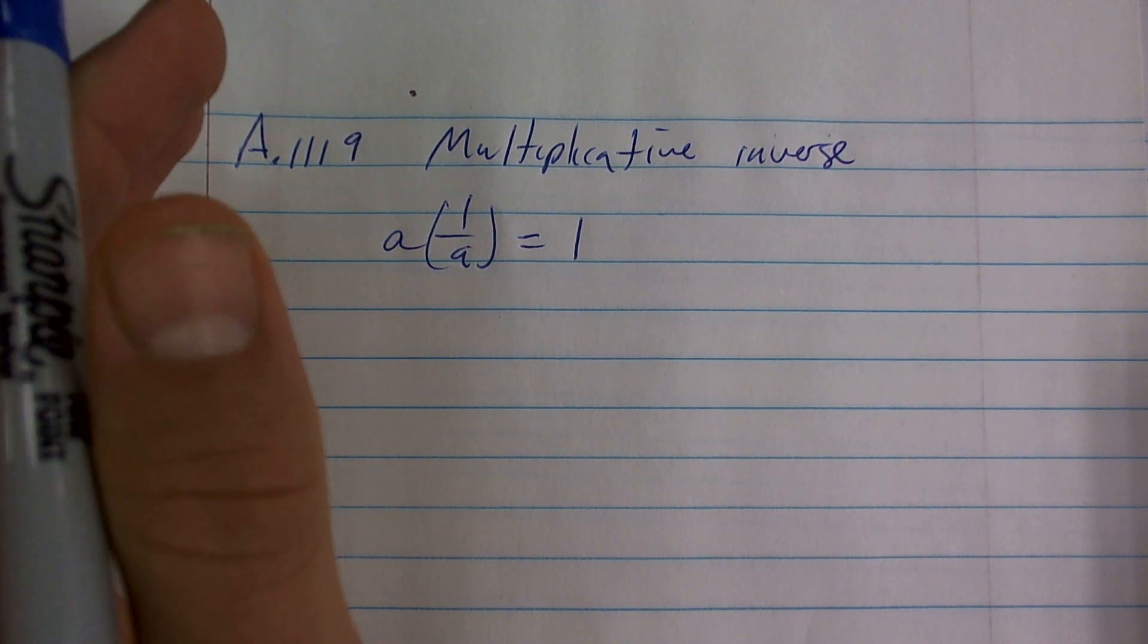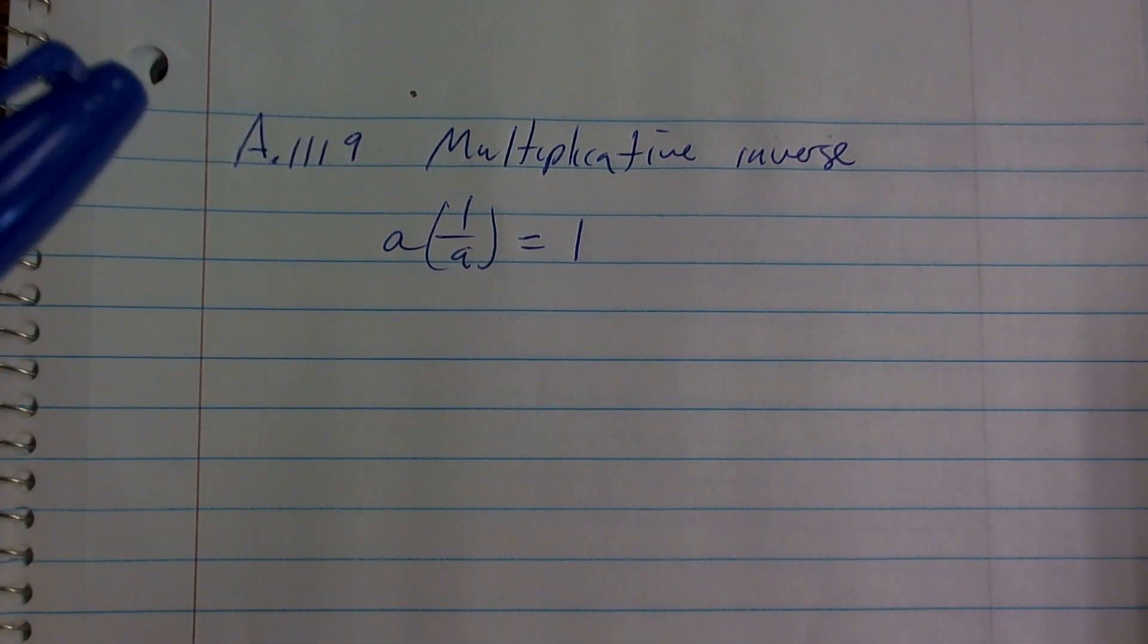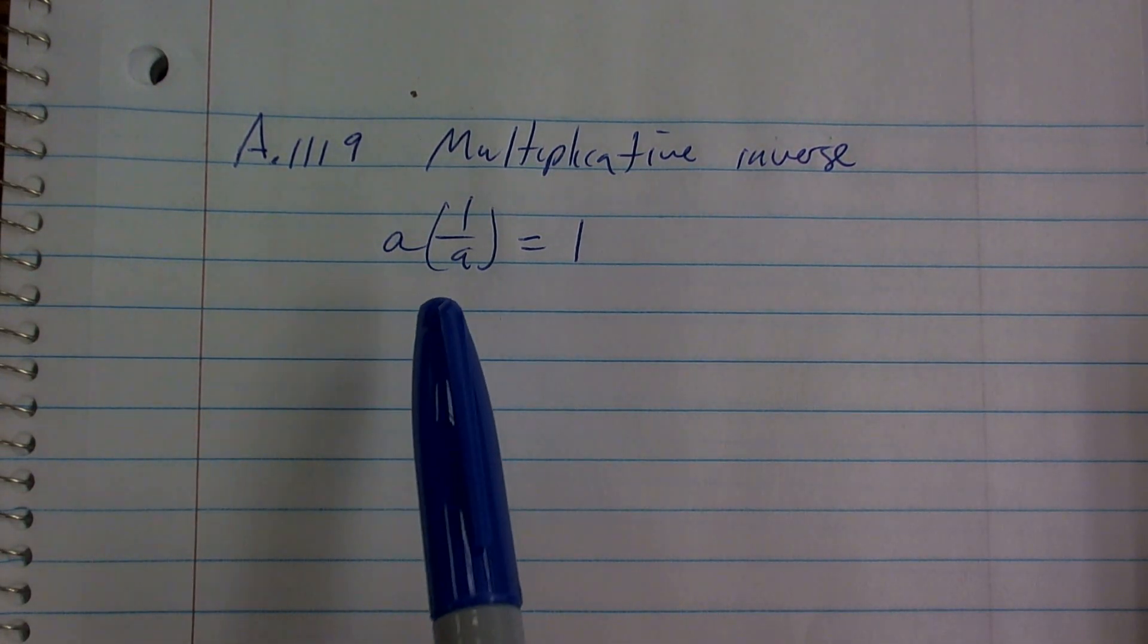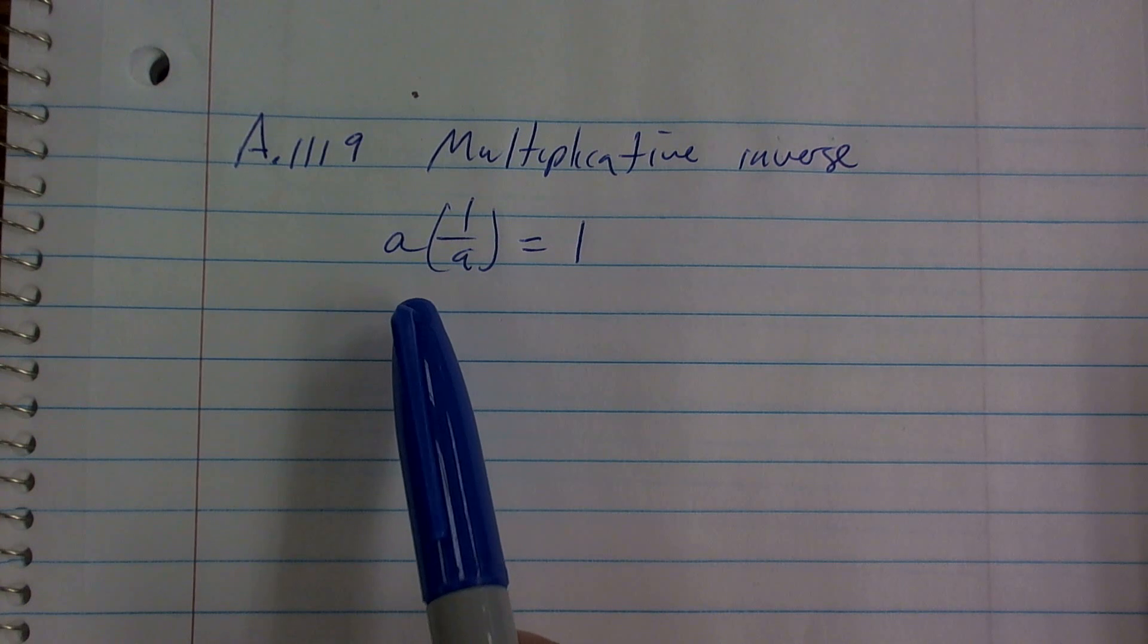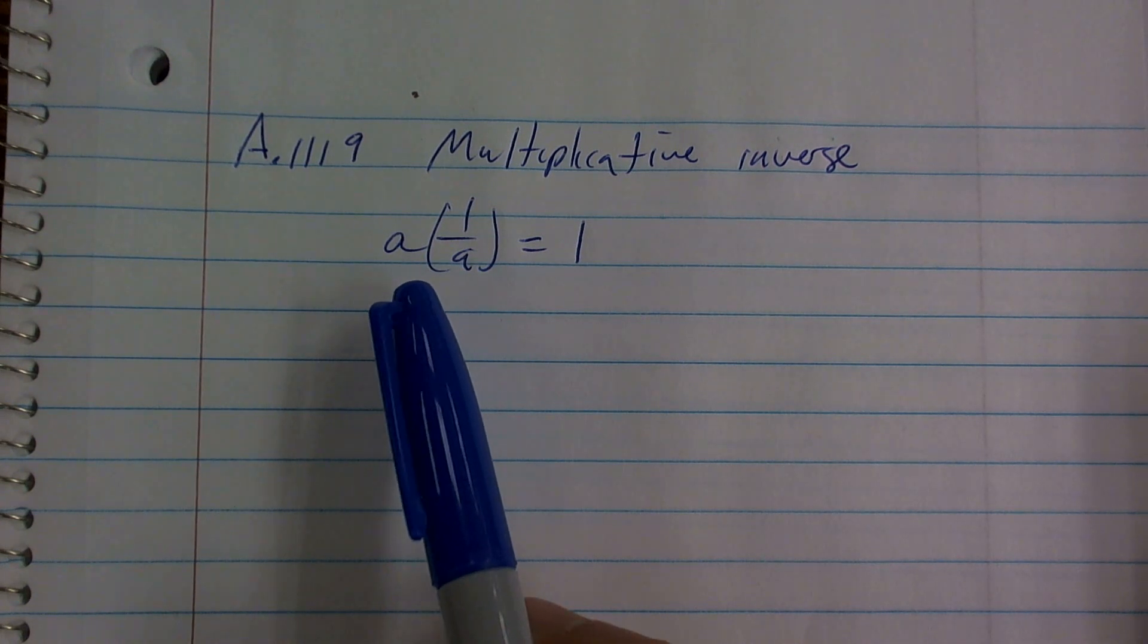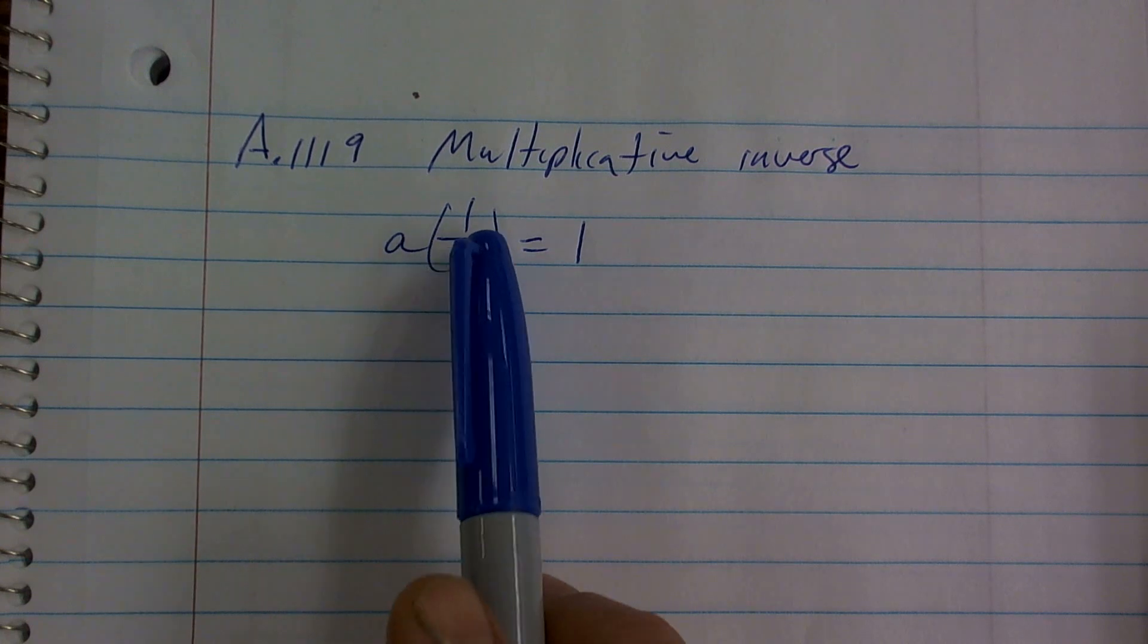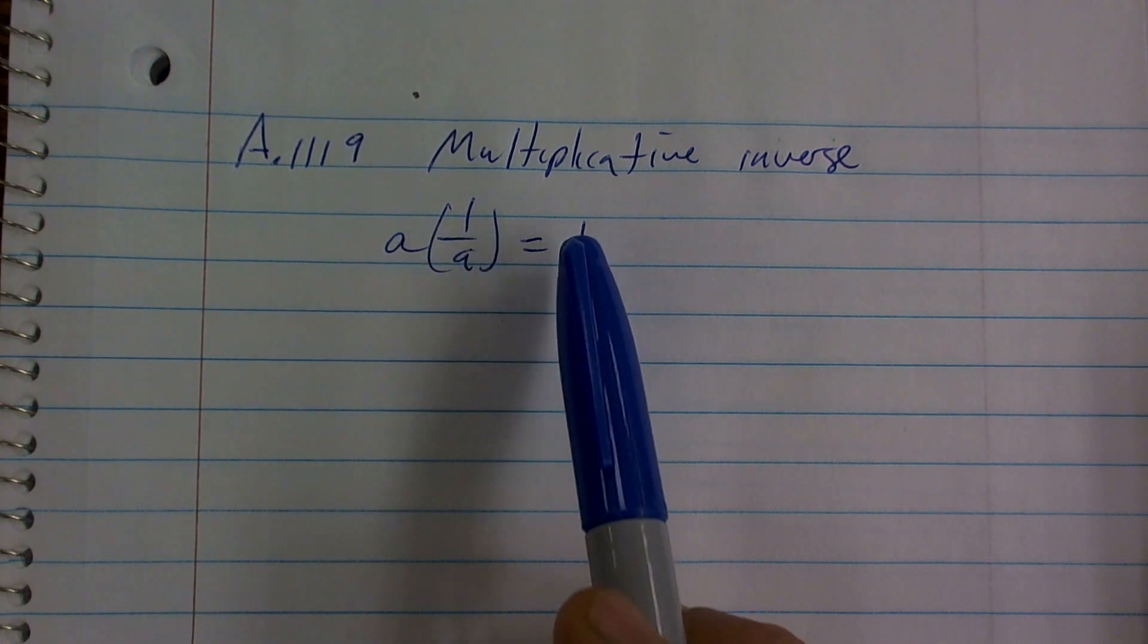All right, let's take a look at the multiplicative inverse. What the multiplicative inverse states is for any non-zero real number a, when we multiply a times 1 over a, what we do is we get 1.